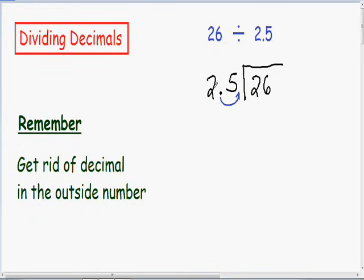And whatever you do to the outside number, you also have to do to the inside number. But notice how the inside number doesn't have a decimal. So how are we supposed to move a decimal to the right if we don't have a decimal in the inside number? Well this can be solved quite easily. We can just add a trailing zero. 26 is exactly the same as 26.0.